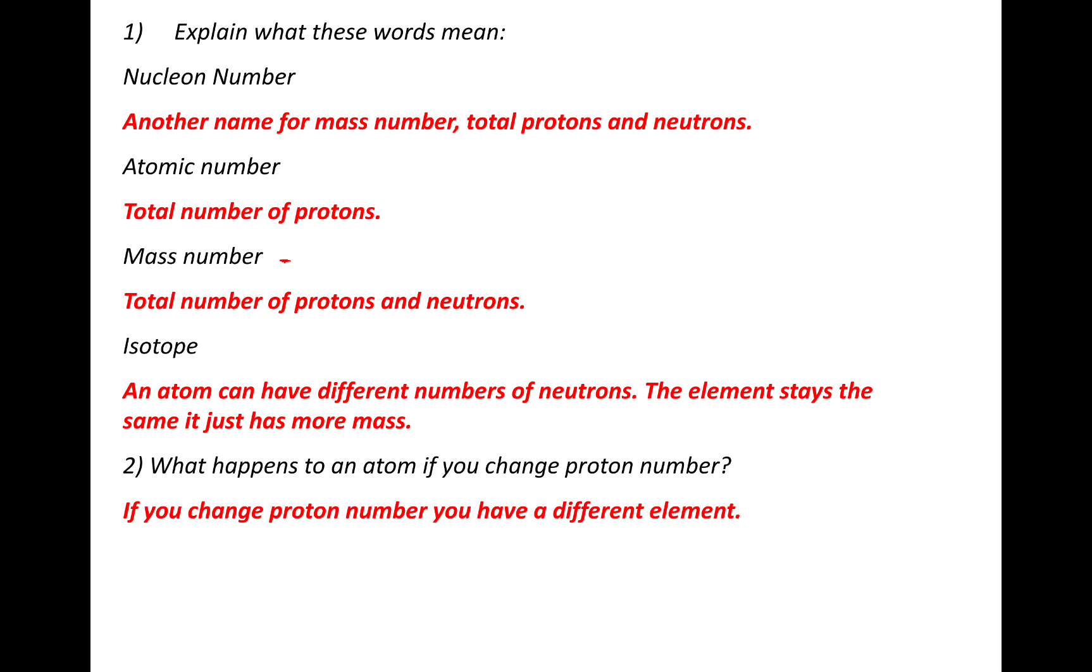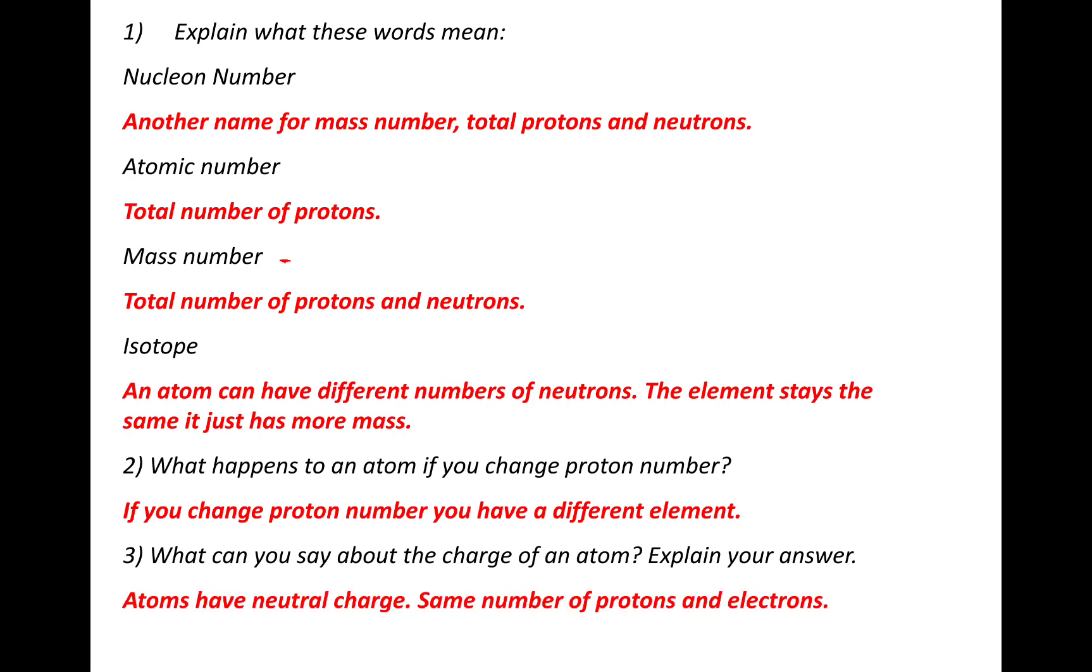What happens to an atom if you change the proton number? We looked at the periodic table. If you change the proton number, you would get a different element. The proton number depicts the element that you've got. What can you say about the charge of an atom? Atoms have neutral charge, and they have the same number of protons and electrons. So hopefully that introduction to atomic structure went okay. I hope you found it useful. Thanks for watching, and I'll see you soon. Bye-bye.